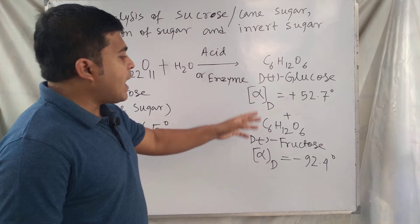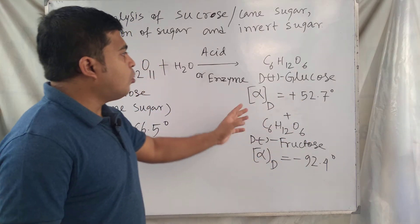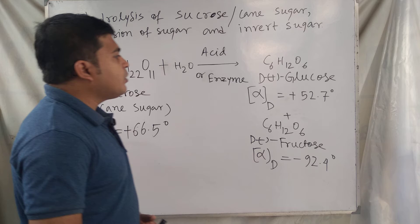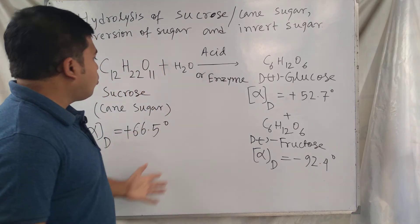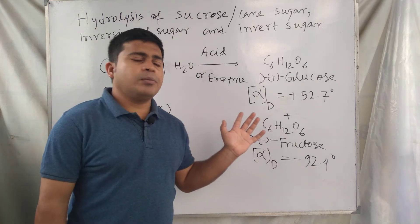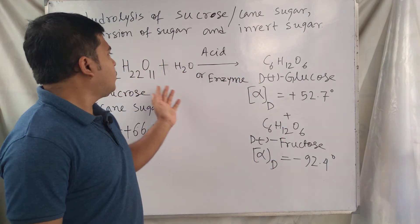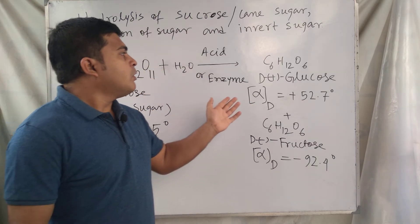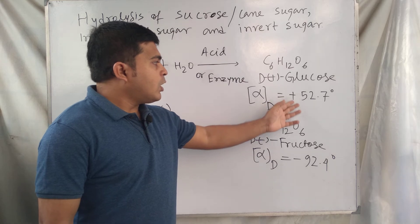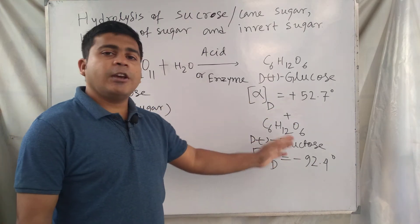Overall, the mixture shows a negative rotation because +52.7 and -92.4 degrees — the negative value is more than the positive value. As a result, the solution has a negative specific rotation, showing levorotatory nature after hydrolysis of sucrose by acid or enzyme like invertase.